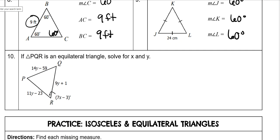So to solve for x, remember I told you on an equilateral triangle, all the angles are equal to 60 degrees. So 7x minus 3 is equal to 60 degrees. Add 3 to both sides. 7x is equal to 63. Divide by 7, and x is 9.